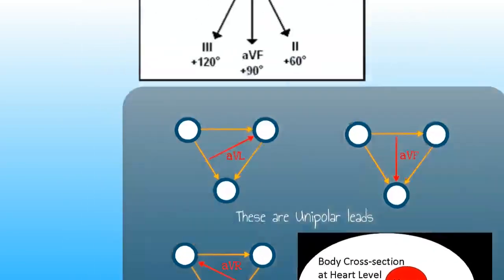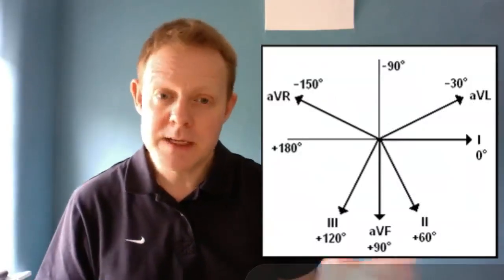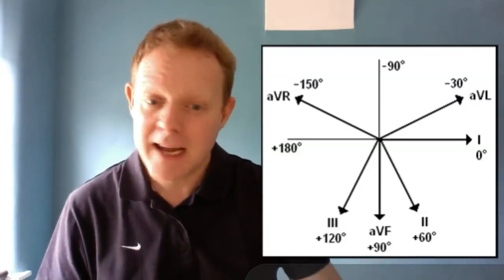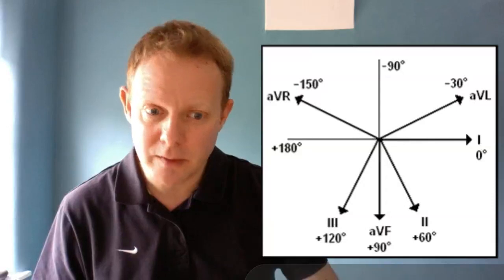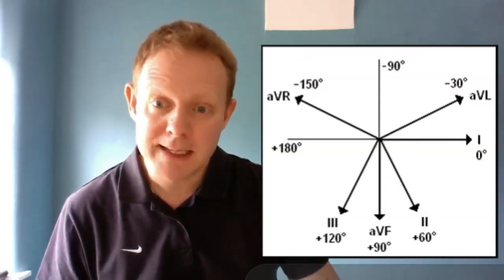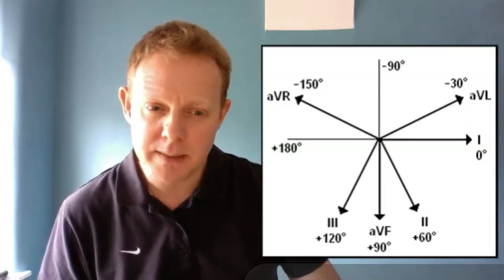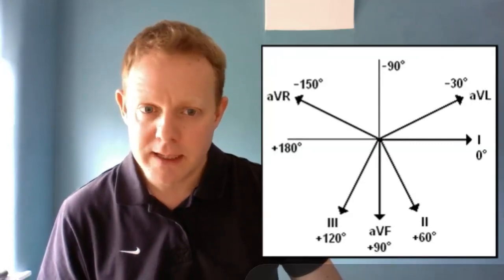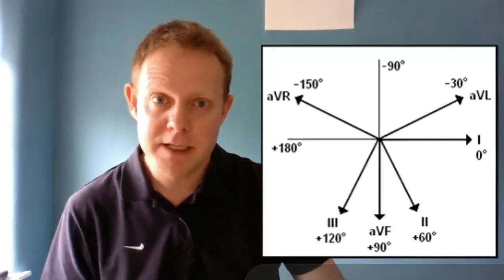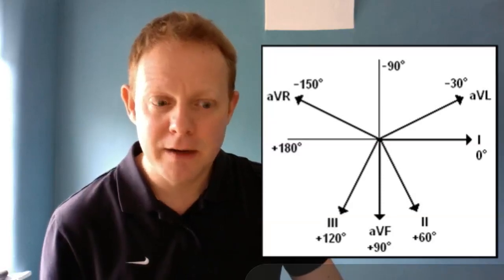And that is how we get our 12-lead ECG. So to finish, you might well be familiar with this diagram, which shows you the angle that each lead is looking at. And now we can understand how we got that. So we've got lead 1 going across at 0, 2 at 60, 3 at 120, and then we've got those augmented leads where we took an average, AVL looking leftwards at minus 30 because it's upwards a little bit. AVF is looking straight down to the floor at 90, and AVR we might call minus 150. That's how we record the 12-lead ECG. That's how we remember where each lead is looking at in the heart. Thank you very much.